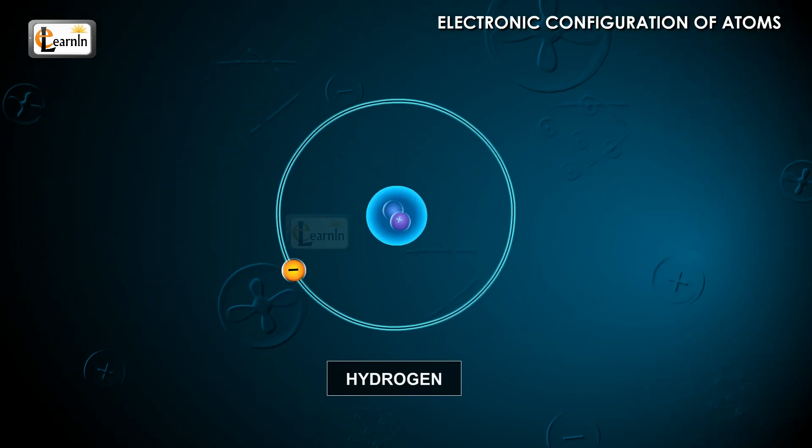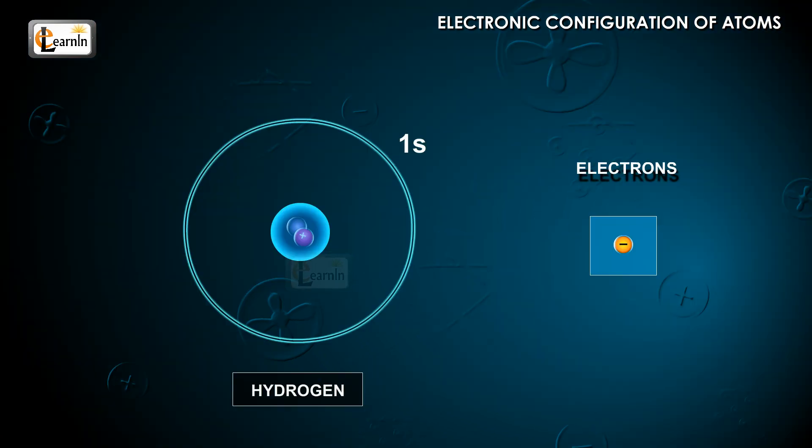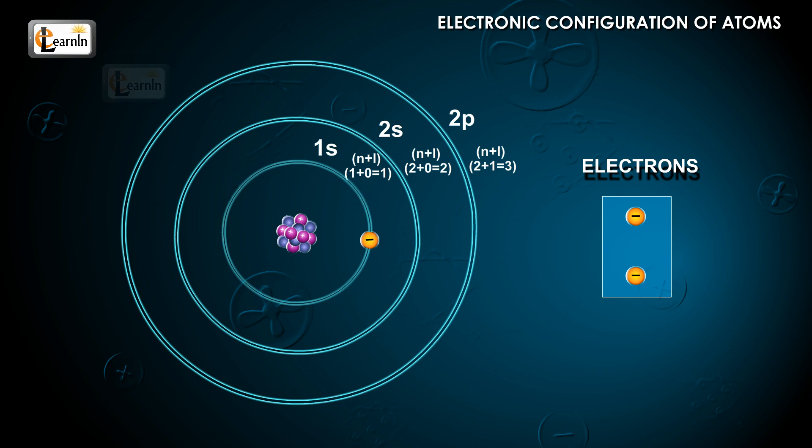The Aufbau or Building Up Principle can be explained with the example of the hydrogen atom. Hydrogen has one electron. This electron enters the 1s orbital, which has the lowest energy. In other words, the Building Up Principle states that the incoming electrons go to an orbital which has the least n plus l value.